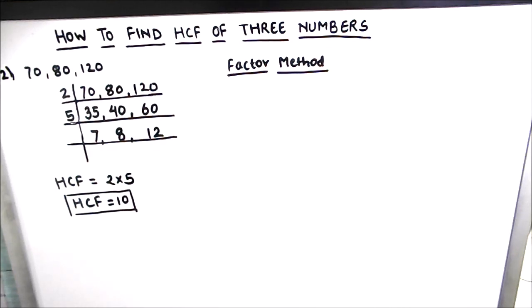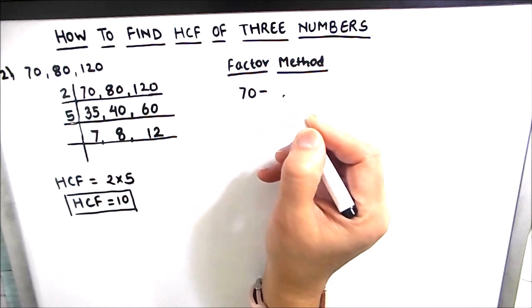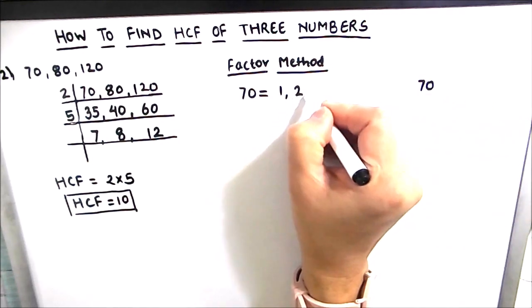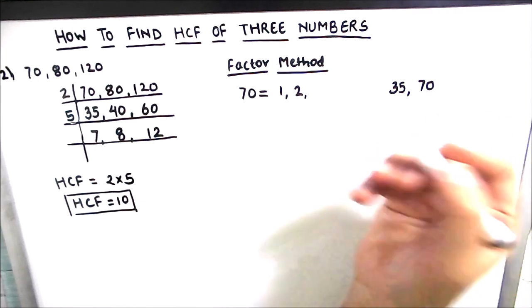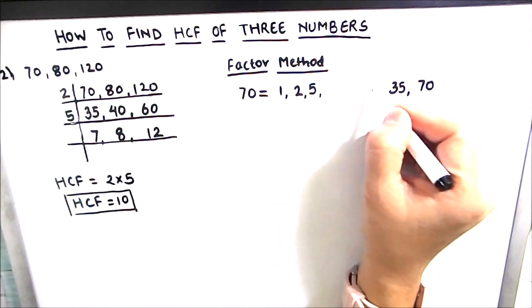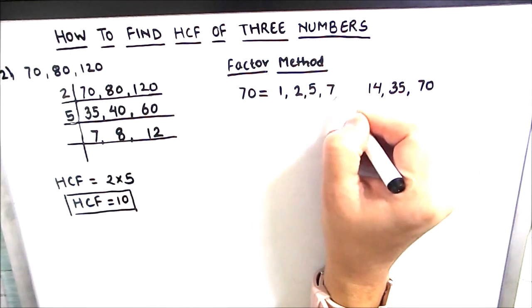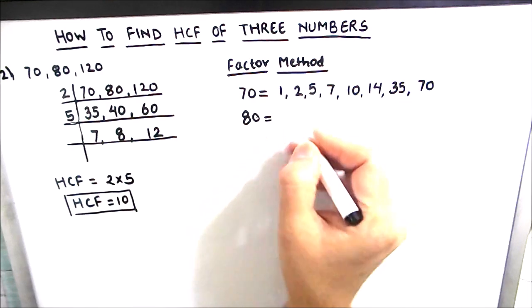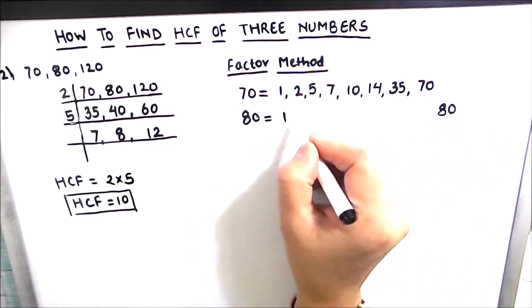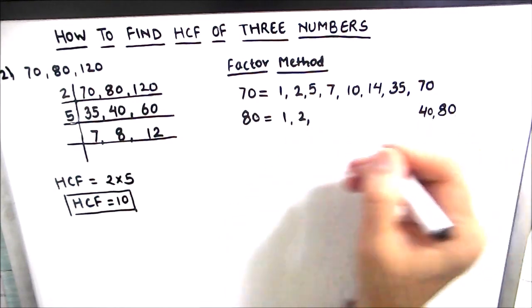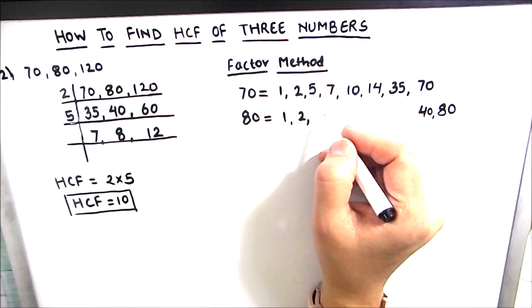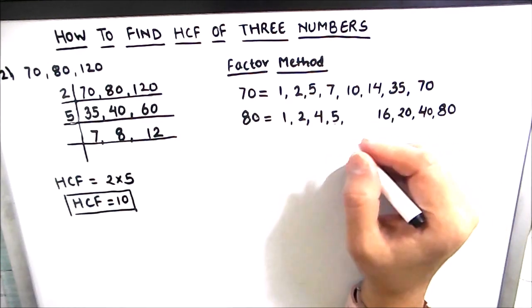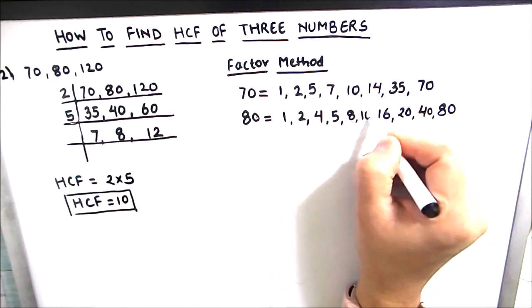Now let us find the HCF using the factor method. Factors of 70: 1, 2, 5, 7, 10, 14, 35, 70. Factors of 80: 1, 2, 4, 5, 8, 10, 16, 20, 40, 80.